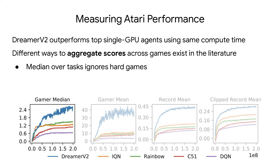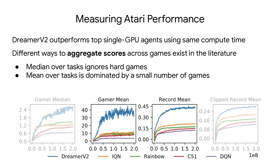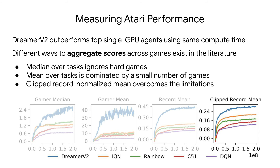But the median ignores all the hard games. On the other hand, the mean over tasks is dominated by a small number of games where the random and human performance lie very close together. To overcome these limitations, we suggest normalizing the score of each game using the human world record, which is close to the optimal performance on many games, and then clipping the score to not exceed the record, so that games where superhuman performance is easy don't dominate the final score. We can then safely report the mean over all tasks, getting a balanced and robust measure of performance.